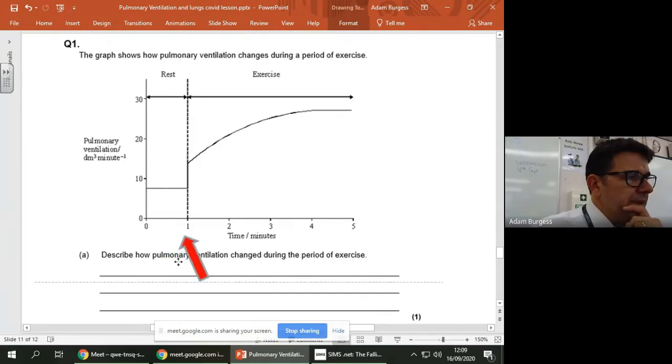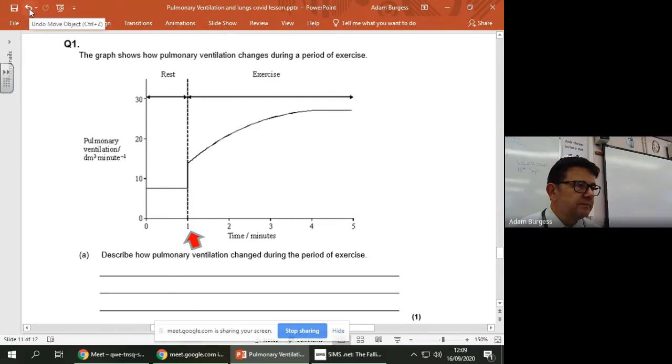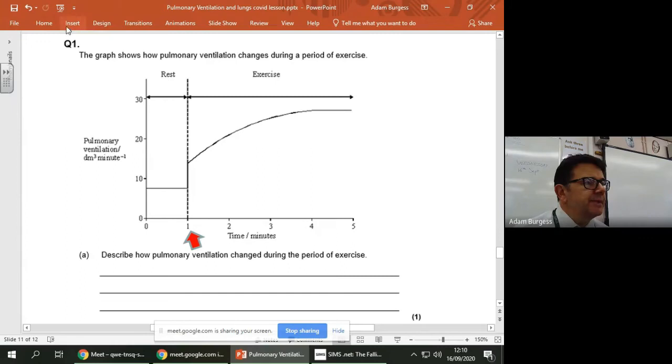It's at one, so some students would start at zero, but if you notice, exercise starts at one. So your answer needs to talk about the fact that pulmonary ventilation increases up to around about four minutes, and at four minutes, it plateaus.